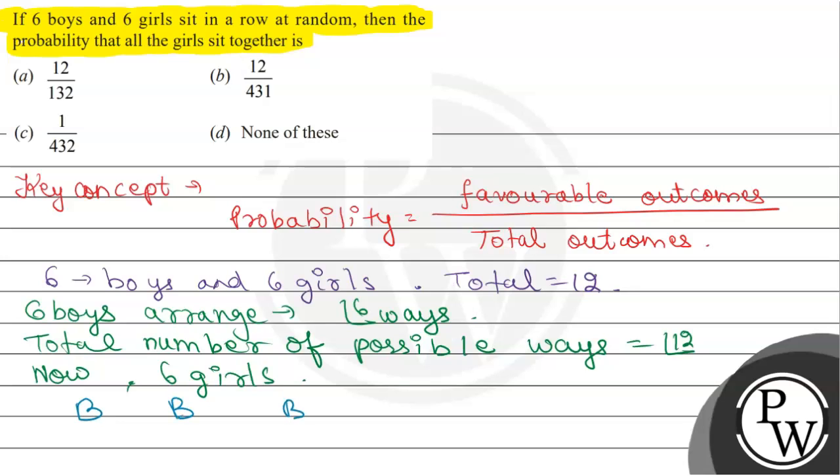Let us denote B as boys. So there are 6 boys, okay.